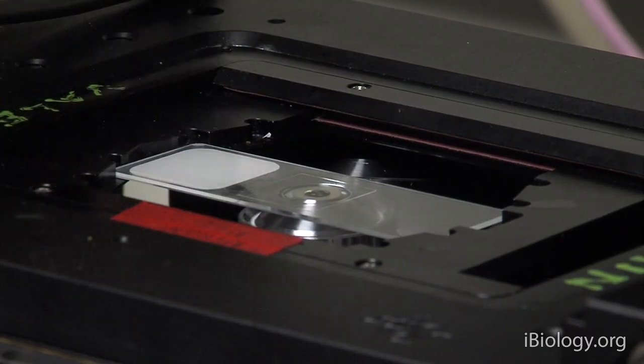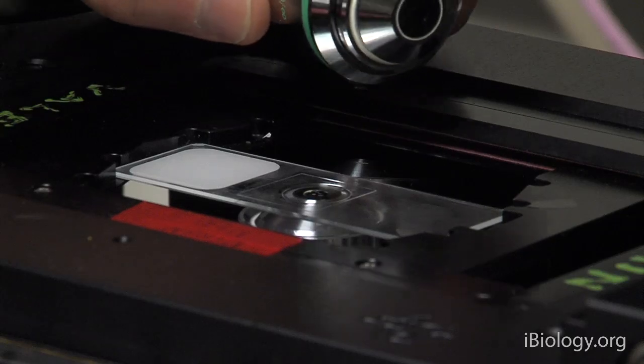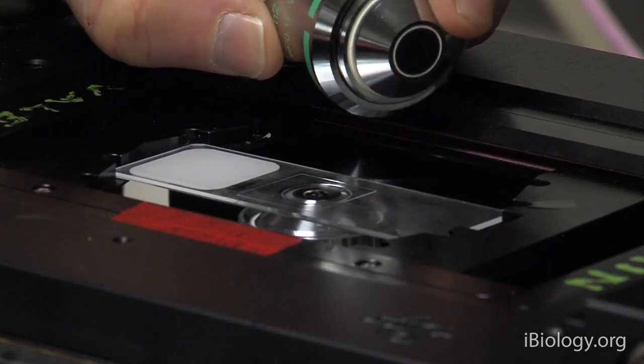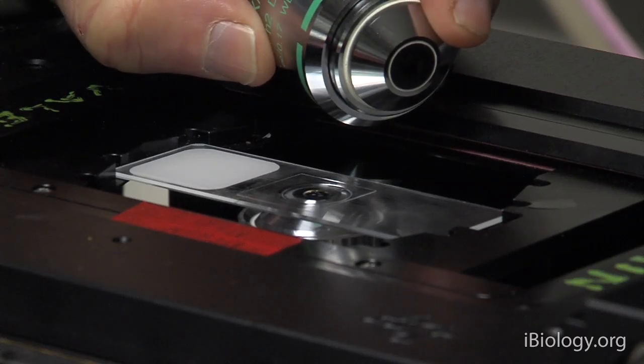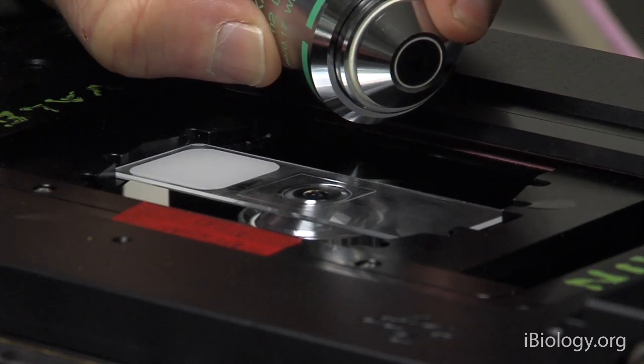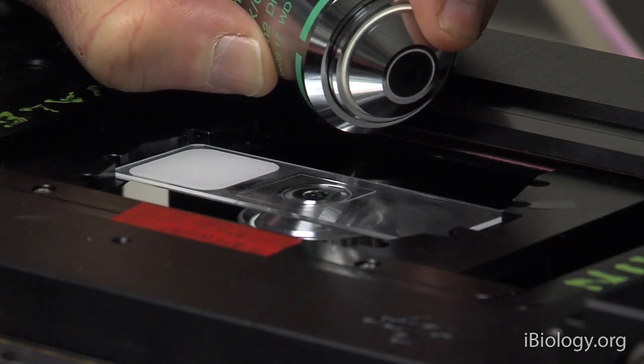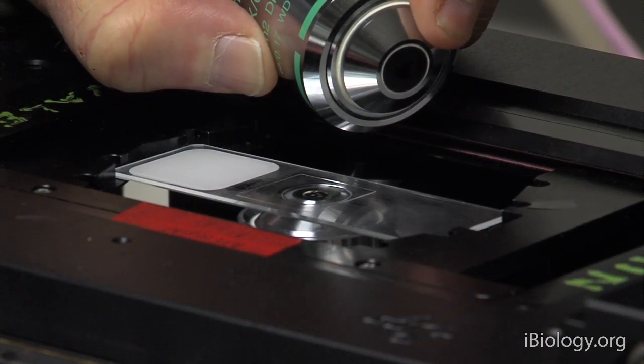And second of all, another thing that helps protect these objective lenses is a spring load that's built into the objective lens. So you can see this spring load here. So if it pushes against something, rather than just pushing on the objective lens itself, the spring load will go down.